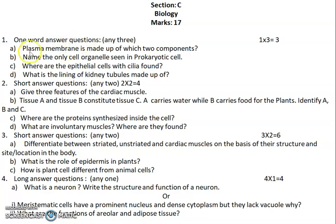First, we have one-word answer questions, each carrying one mark. Question 1a: plasma membrane is made up of which two components? Plasma membrane is made up of two organic molecules called lipids and proteins.